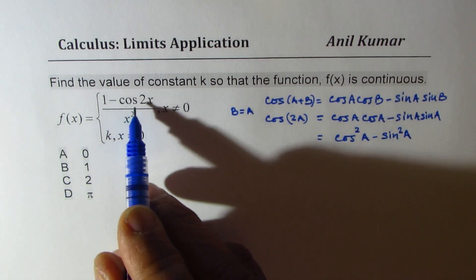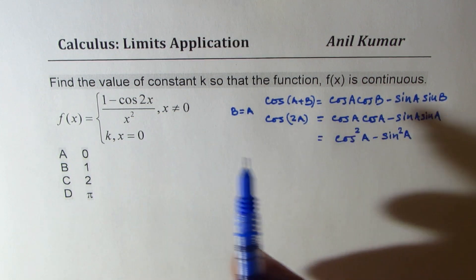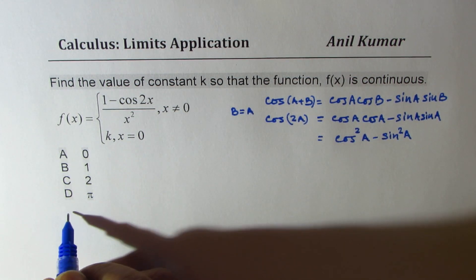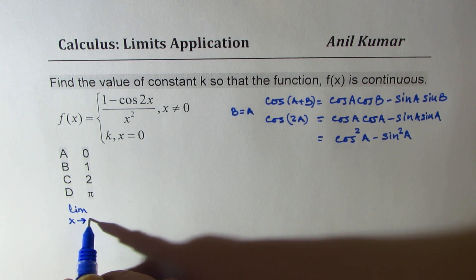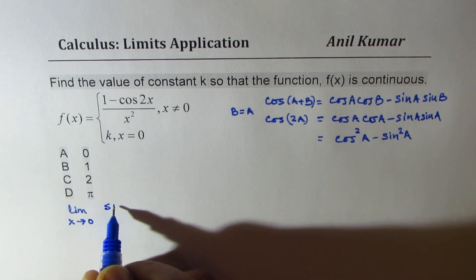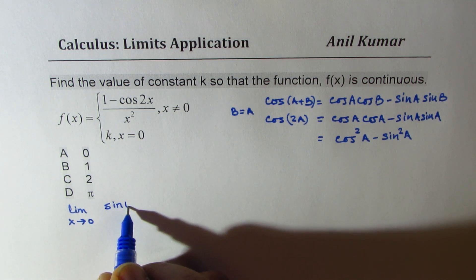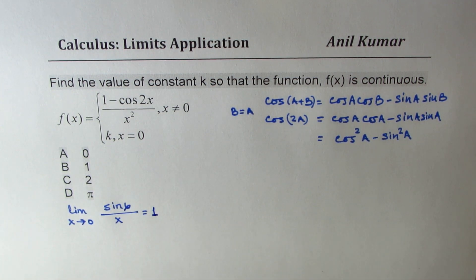In our case we want cos 2x and we know one thing, as far as the limit goes, we know when limit x approaches 0, then sin x over x is equal to 1. So we know this part.